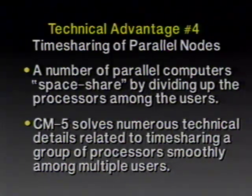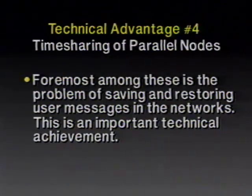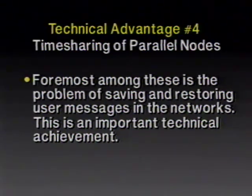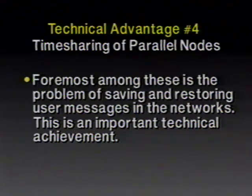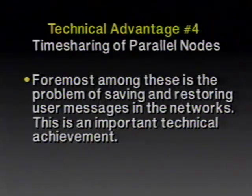Technical advantage number 4: we solve the naughty problems of time sharing on parallel nodes. Many parallel machines including the CM1 and CM2 provided for division of the machine into sections for space sharing. But we've also solved the problems of time slicing. The CM5 was designed from the ground up to support time sharing with all the necessary security and efficiency mechanisms for switching user context and swapping user tasks. Given that the user has direct access to the networks, there was a very difficult technical problem of getting user state out of the networks quickly when it's time to switch users, and then restoring that clogged network state. Those were significant technical problems.